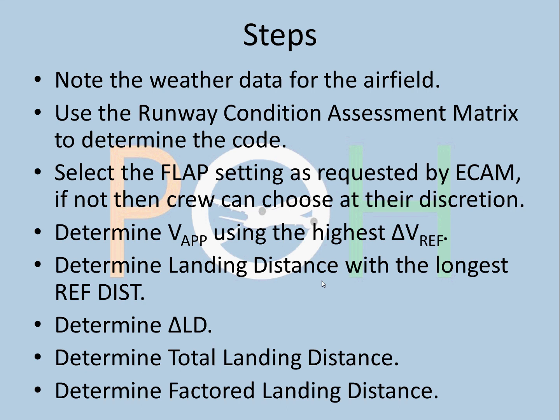Steps: Note the weather data for the airfield. Use the runway condition assessment matrix to determine the code. Select the flap setting as requested by ECAM; if not, the crew can choose at their own discretion. Determine V approach using the highest Delta V ref — very important. Determine landing distance with the longest reference distance — again important. Determine delta landing distance. Determine total landing distance. Determine factored landing distance. These are the steps to follow as you go through the video.